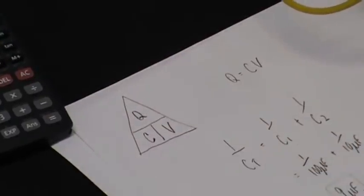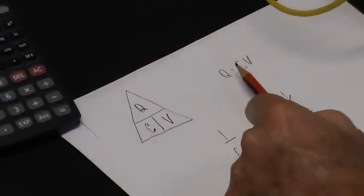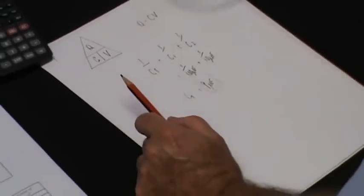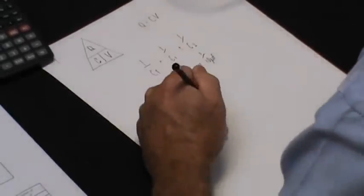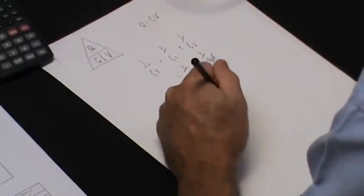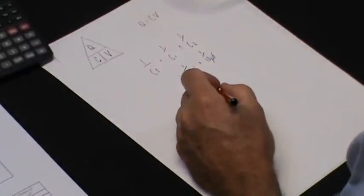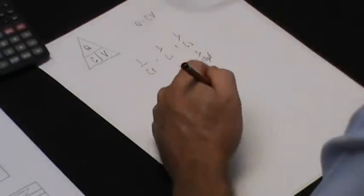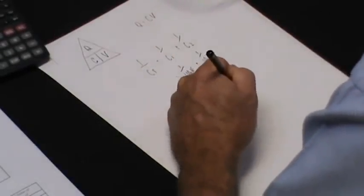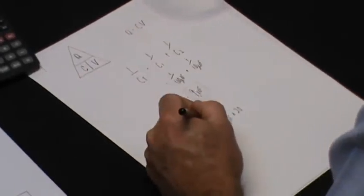If I transpose that formula, I could have a look at the total charge flowing through this circuit. It's the same because it's a series circuit. Q equals C times V. If I make the voltage 20 volts, the total capacitance of that series circuit is 9 microfarad, which we've discussed.